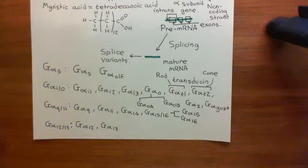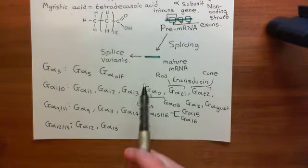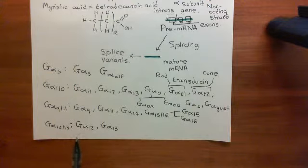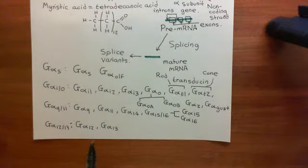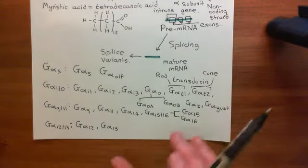Welcome back to this next video in which we are discussing the protein kinase C pathway. We've just gone through all 16 different genes for alpha subunits within the human genome. What we now want to look at is the diversity of the beta subunits and also the gamma subunits within heterotrimeric G proteins, so that we've got a complete picture. Then we'll move forward with our pathway.